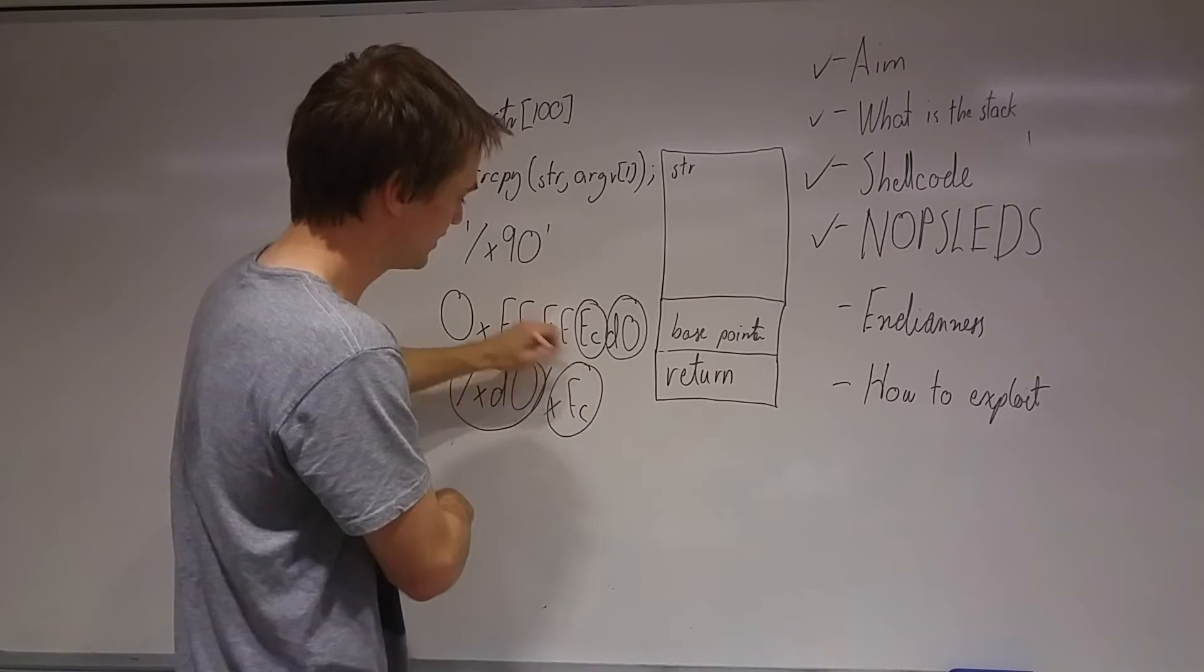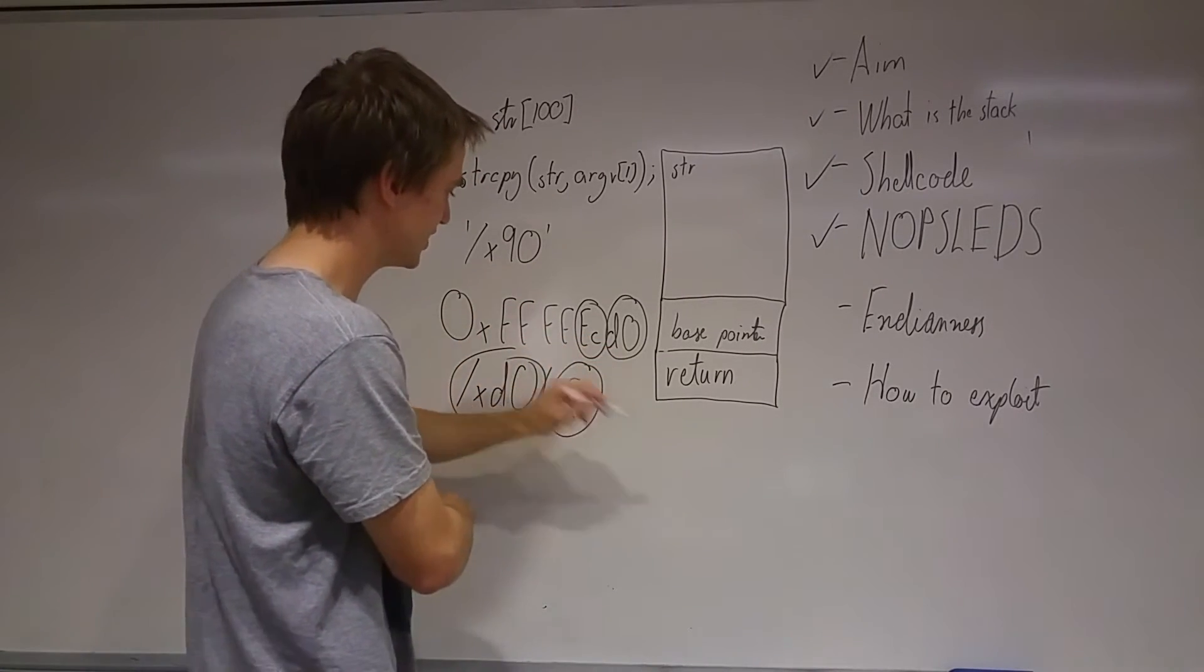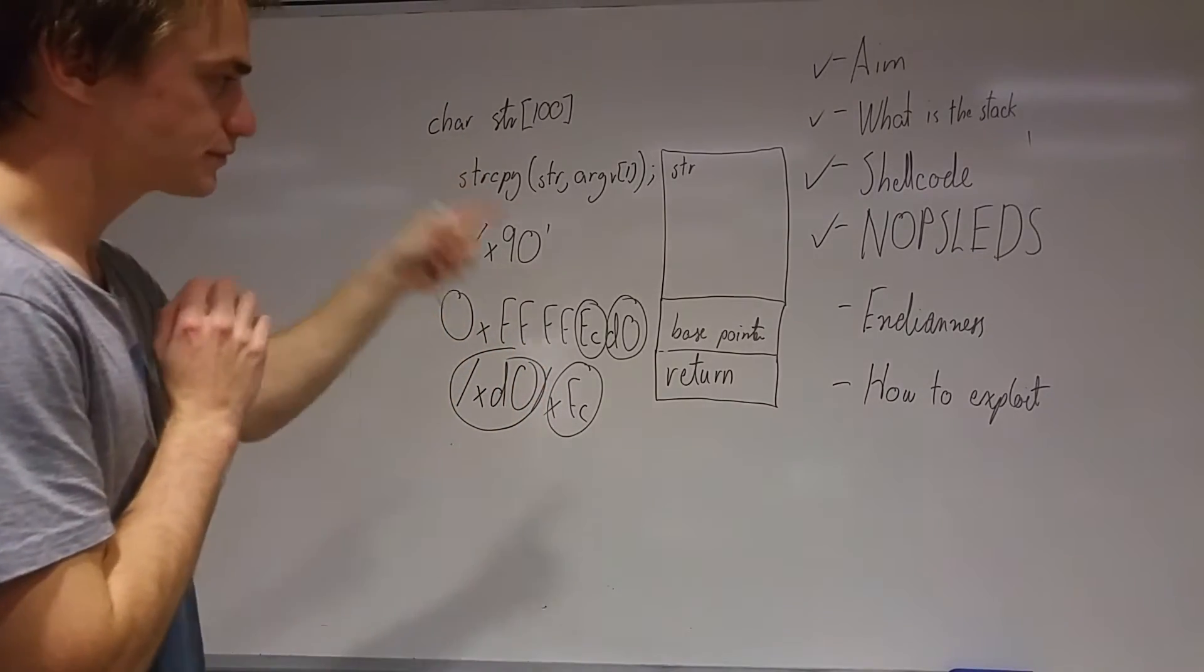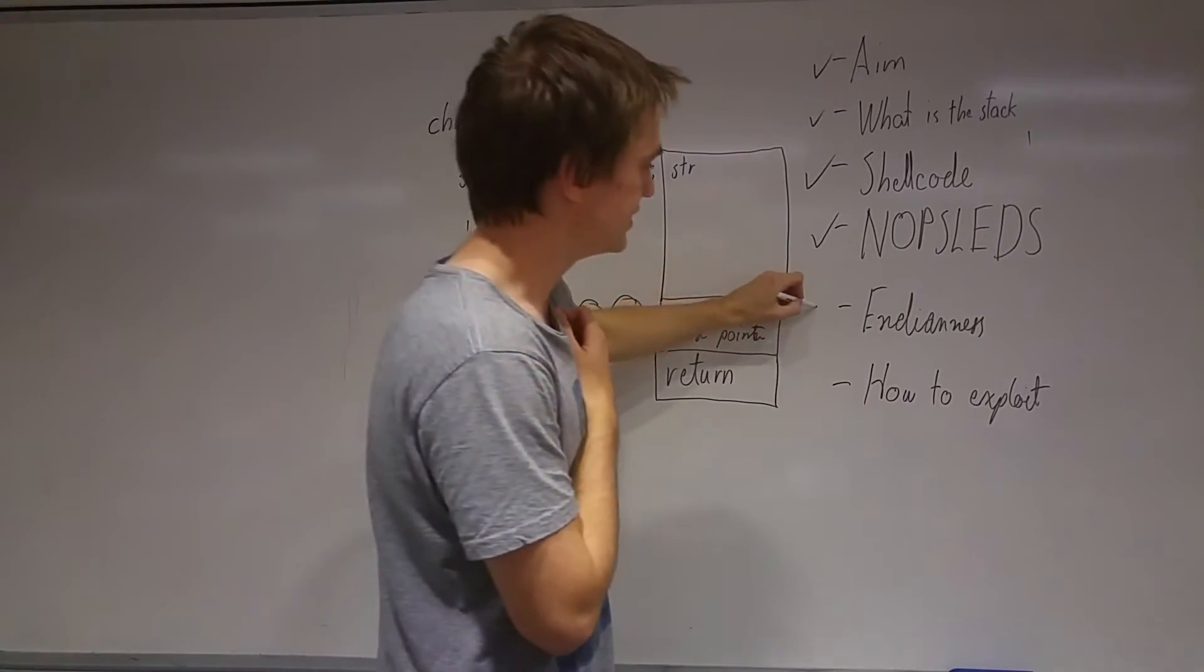For example, our first one here which is D0 is taken from these last two. Then we've got F, C. If we were to continue we'd have \xFF, \xFF. There we go. So we've got that. So that is a bit on endianness.